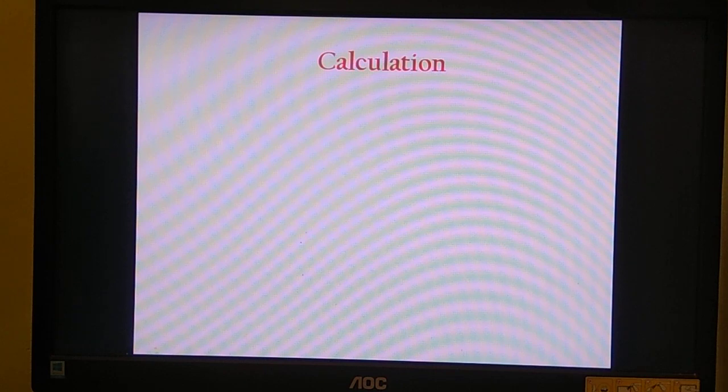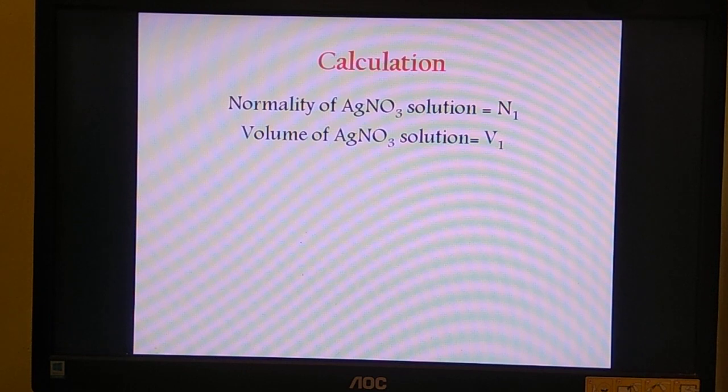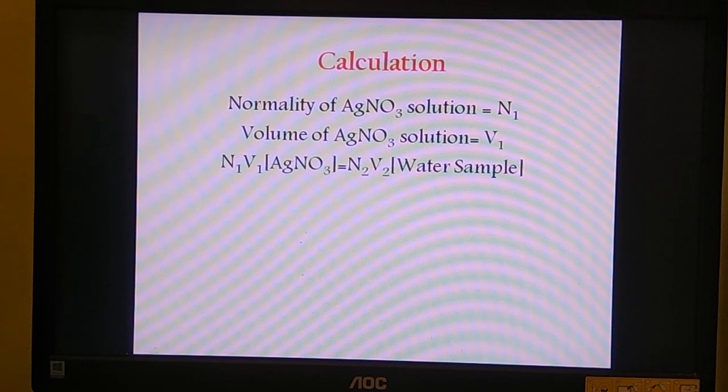Coming to the calculation. Once you wind up with the titration, once the appearance of pinkish red color is observed, we note down the burette reading. That burette reading is the volume of standard AgNO3 solution used and can be represented as V1. Let the normality of standard AgNO3 solution be equal to N1. Volume of AgNO3 solution equals V1 ml, that is the burette reading. The titration equation is N1V1 = N2V2. Here N1 and V1 represent AgNO3 sample, N2 and V2 represent the water sample.